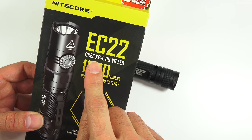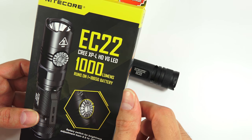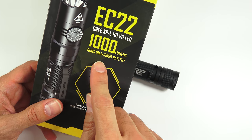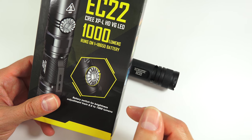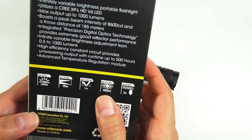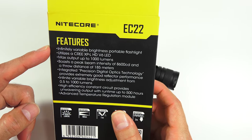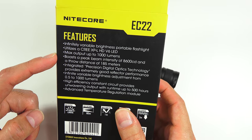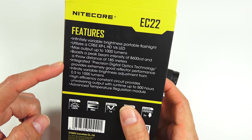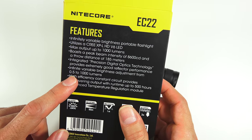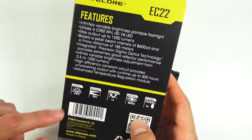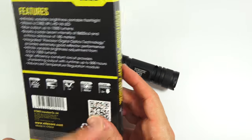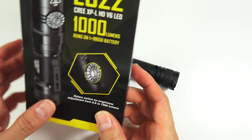Some basics about it. EC22 has the Cree XPL HD V6 LED. Puts out maximum of 1,000 lumens and runs on either one 18650 or two CR123s or RCR123s. Some basics on the back, has that rotary dial. There's the LED, 1,000 lumen output. Will throw a maximum of 185 meters. The low on it is half lumen, so half lumen up to 1,000 lumens. It's IPX8 rated, so it's impact resistant. You can submerge it and all good basic stuff there.